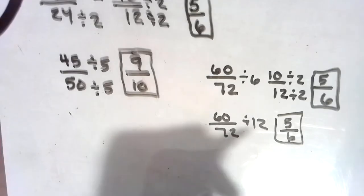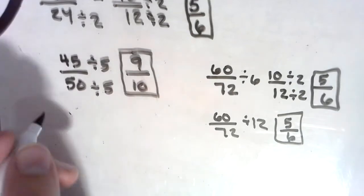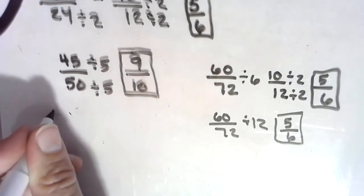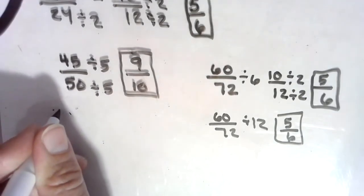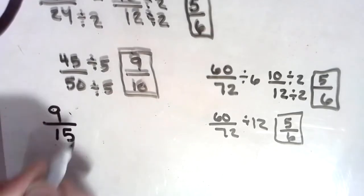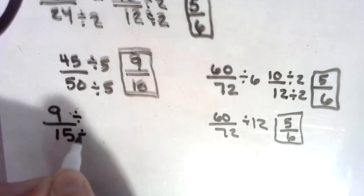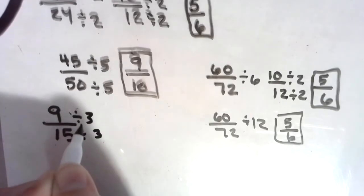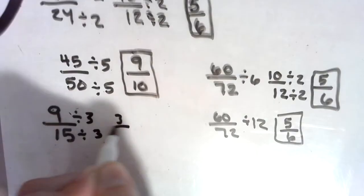So reducing fractions, we could have something as simple as 9/15, which looks simplified, but what can we count by to land on 9s and 15s? That would be a 3. 3, 6, 9, 3, 6, 9, 12, 15. So we're going to divide by 3. 3 goes into 9 three times. 3 goes into 15 five times.